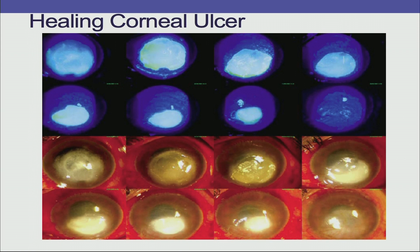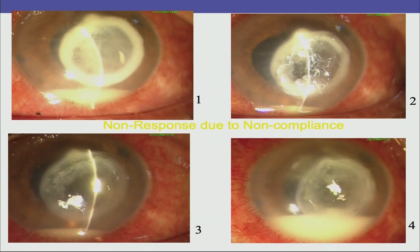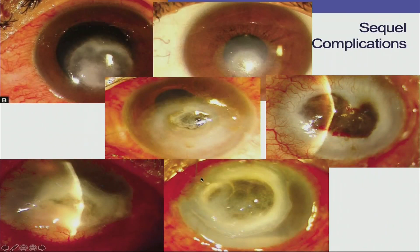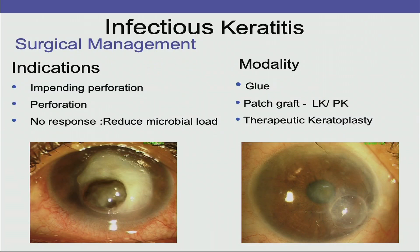The healing of the corneal ulcer over time should result in the ulcer converting into a scar, with the end point being a less hazy scar with minimal opacification. Compliance issues can cause relapse — if the patient stops antibacterials, there can be an increase in hypopyon and ulcer size again. Complications include perforation, thinning, and adherent leucoma. For impending perforation, glue can be used; for actual perforation, patch graft — lamellar or penetrating keratoplasty. For no response, therapeutic penetrating keratoplasty can reduce microbial load.